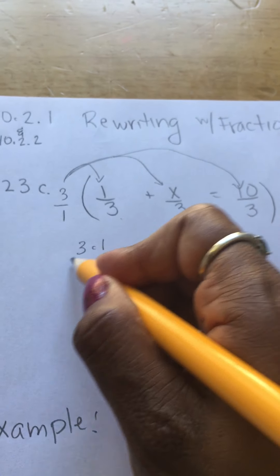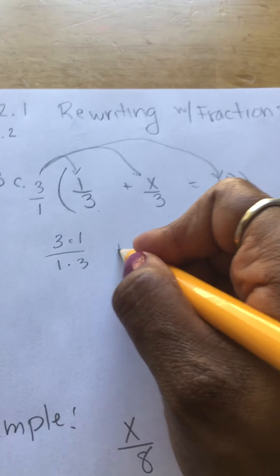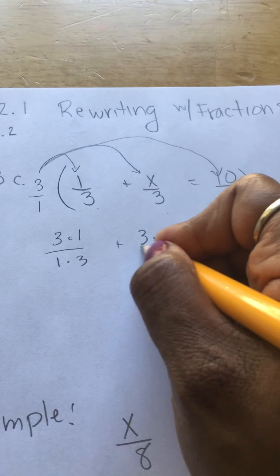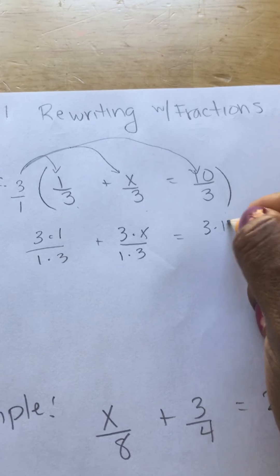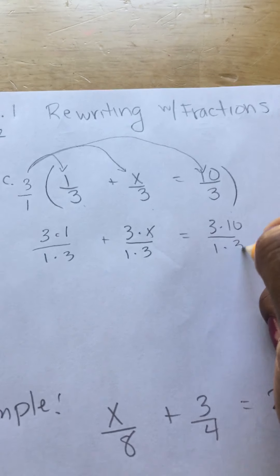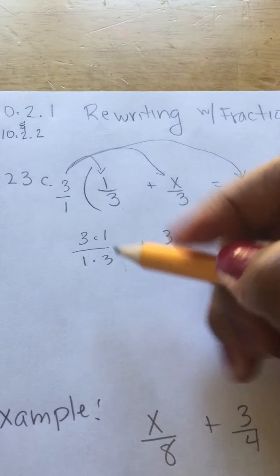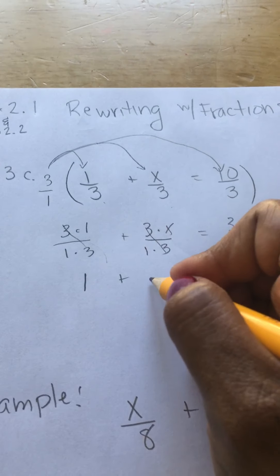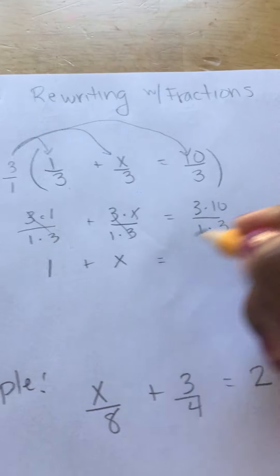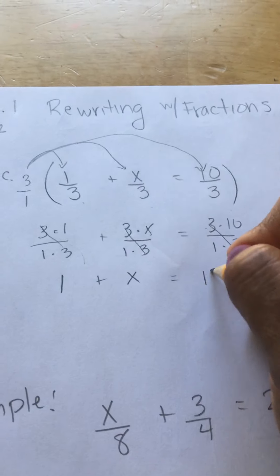3 times 1 over 1 times 3, plus 3 times x over 1 times 3, equals 3 times 10 over 1 times 3. The 3s can cancel right out, and we get left with 1 plus x equals 10.